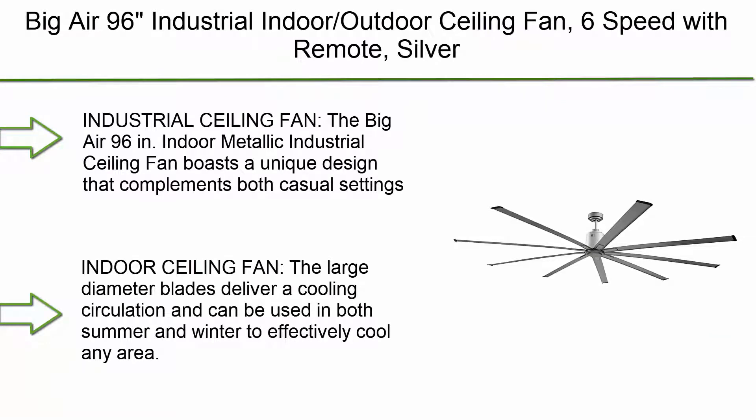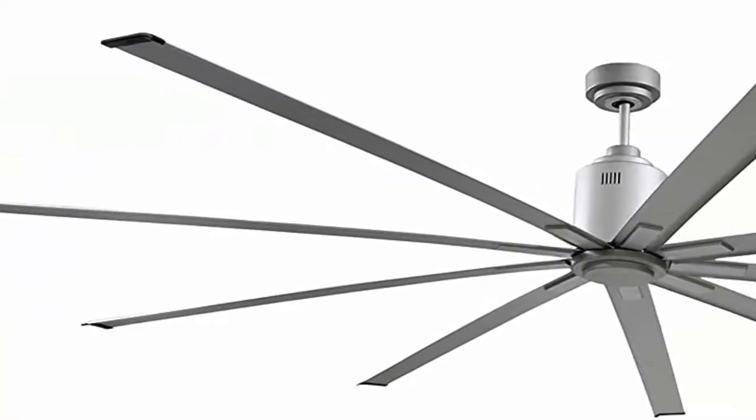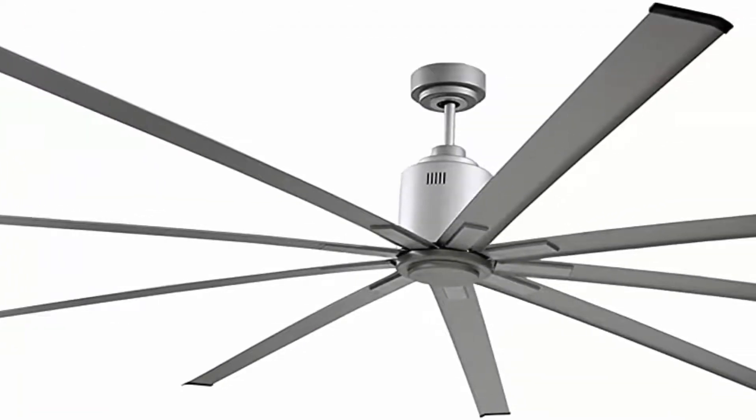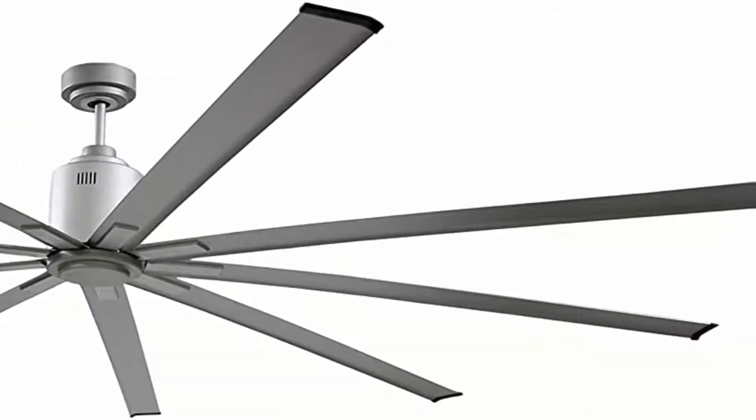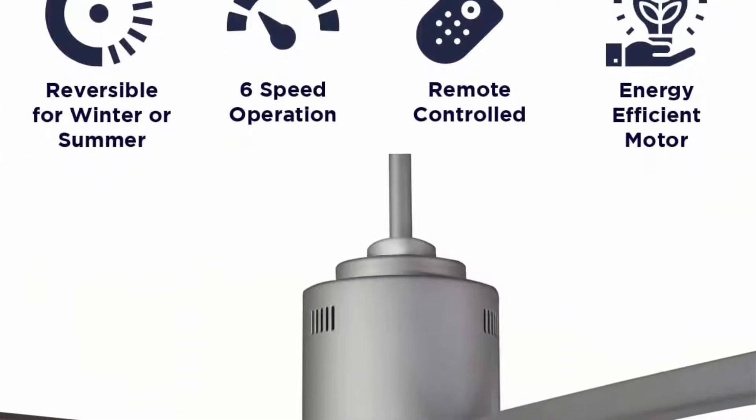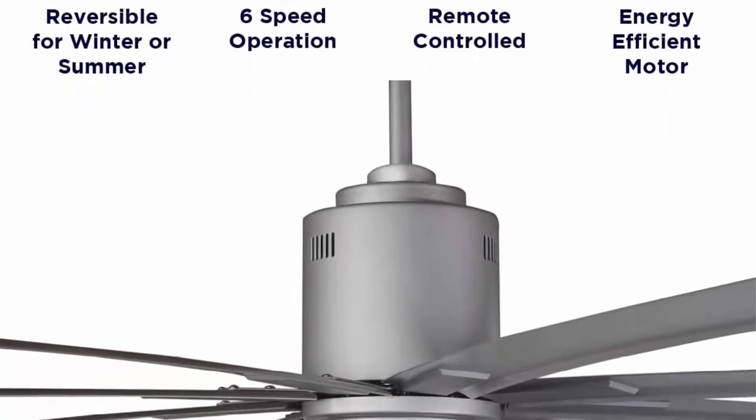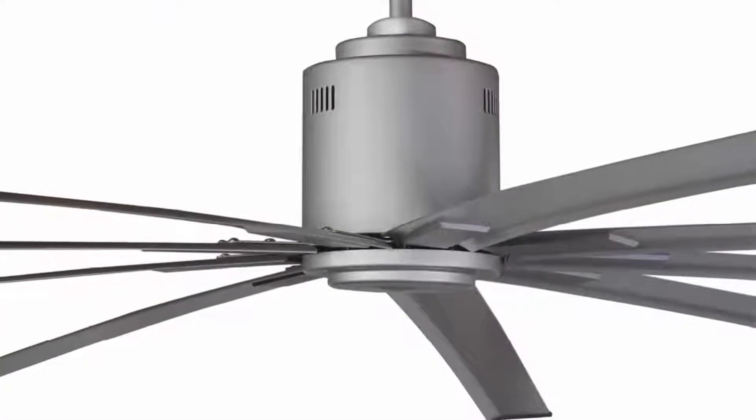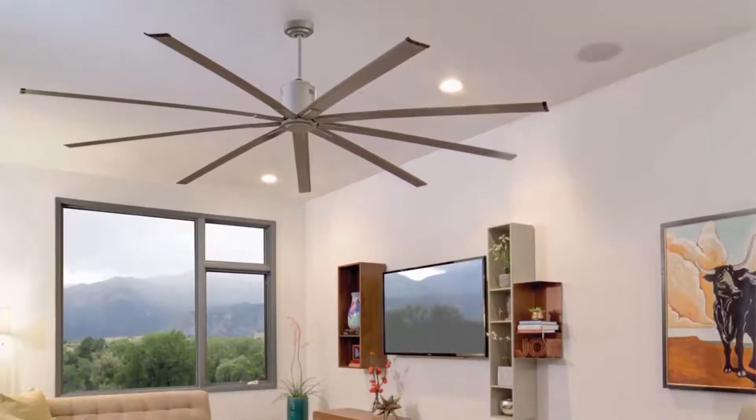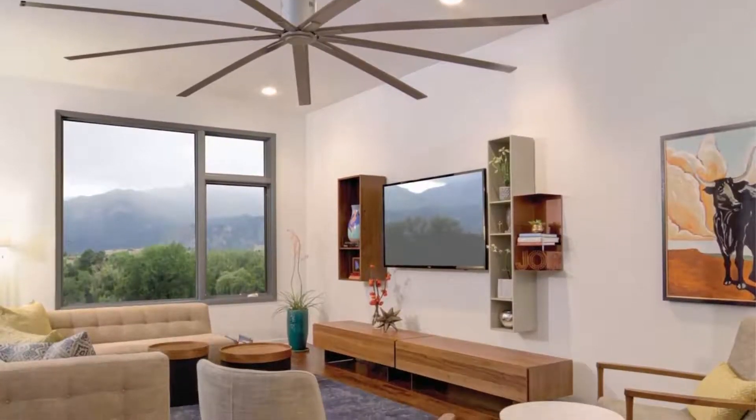Top 7. Big Air 96 Industrial indoor outdoor ceiling fan, 6-speed with remote, silver industrial ceiling fan. The Big Air 96 inch indoor metallic industrial ceiling fan boasts a unique design that complements both casual settings such as shops and barns, and sophisticated areas like in your office or living room. Perfect for garage, commercial, residential, any home improvement project that wants a sleek modern look. Indoor ceiling fan.